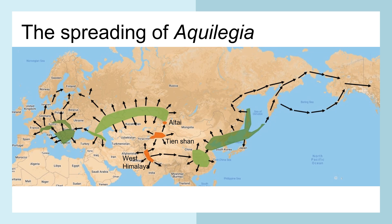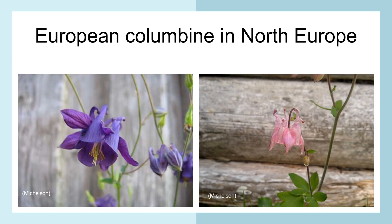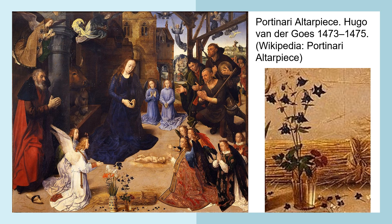The spreading of Aquilegias. Here one can see different centers and how they have been spreading out. Let's have a look at the European Columbine population here in North Europe. We will start by looking at some very old paintings. Here is one by Hugo van der Goes, painted between 1473 and 1475.